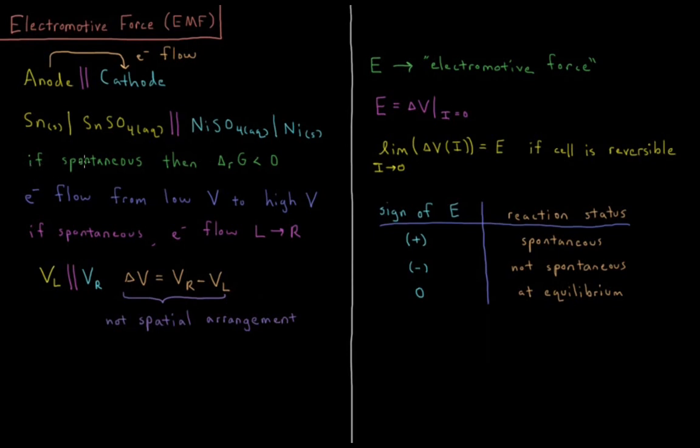If this reaction is going to be spontaneous, if we have the electrons flowing from left to right without any external input of energy, then the Gibbs energy of this reaction has to be less than zero.